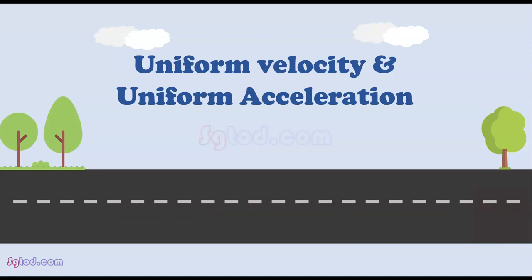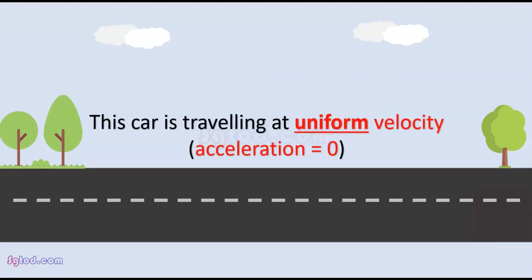Many exam questions use these two terms to provide important information required to solve the question, so you must know them. When an object's velocity is not increasing or decreasing, we say its velocity is uniform. So when a question mentions uniform velocity, you must know that acceleration is equal to zero.